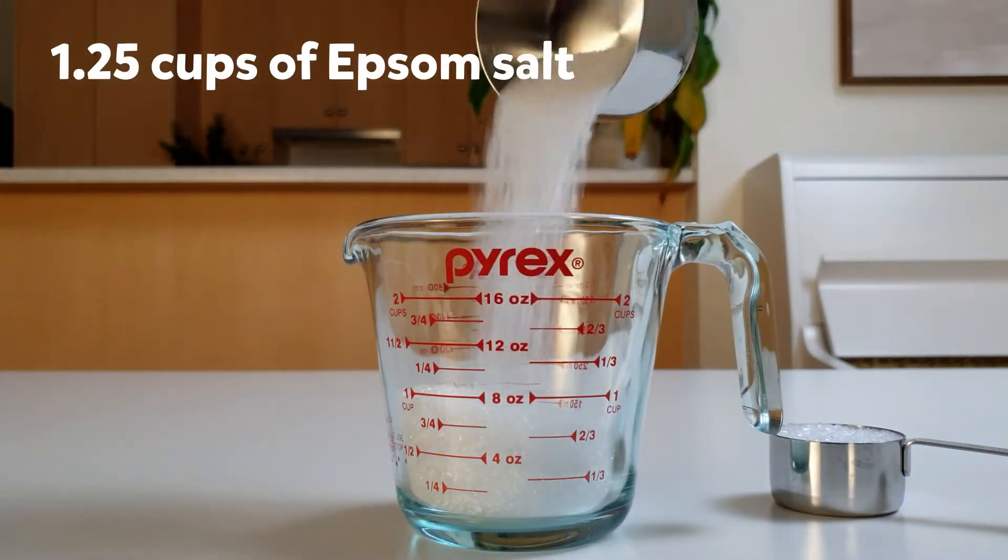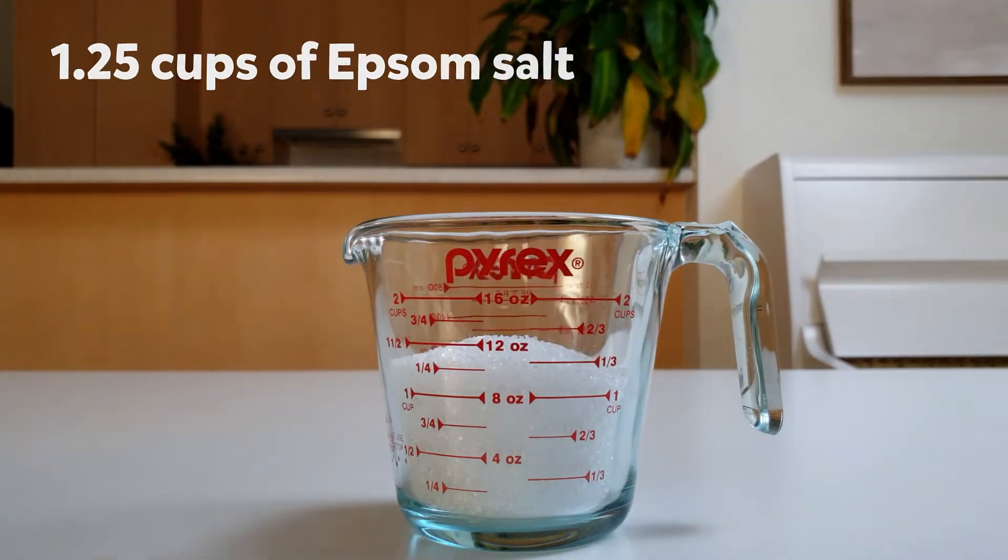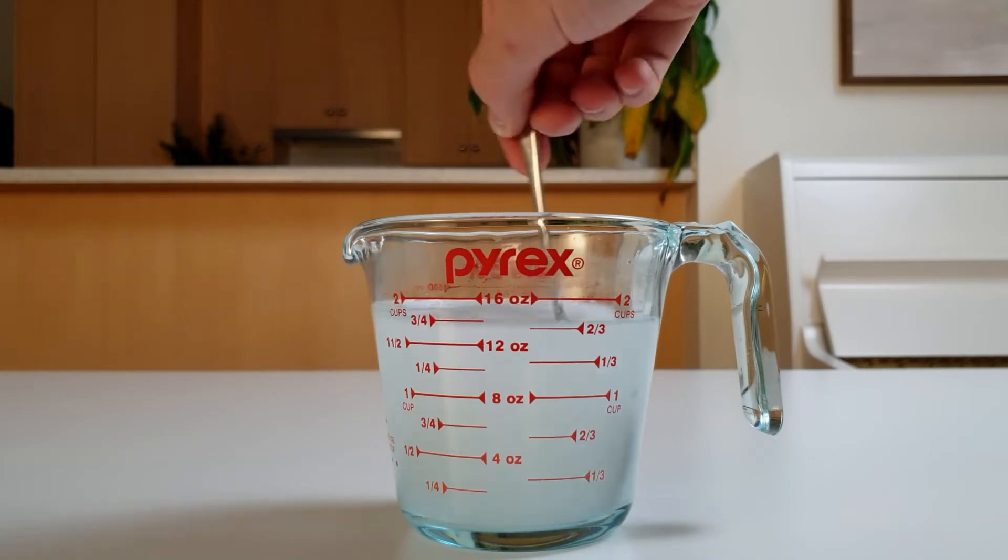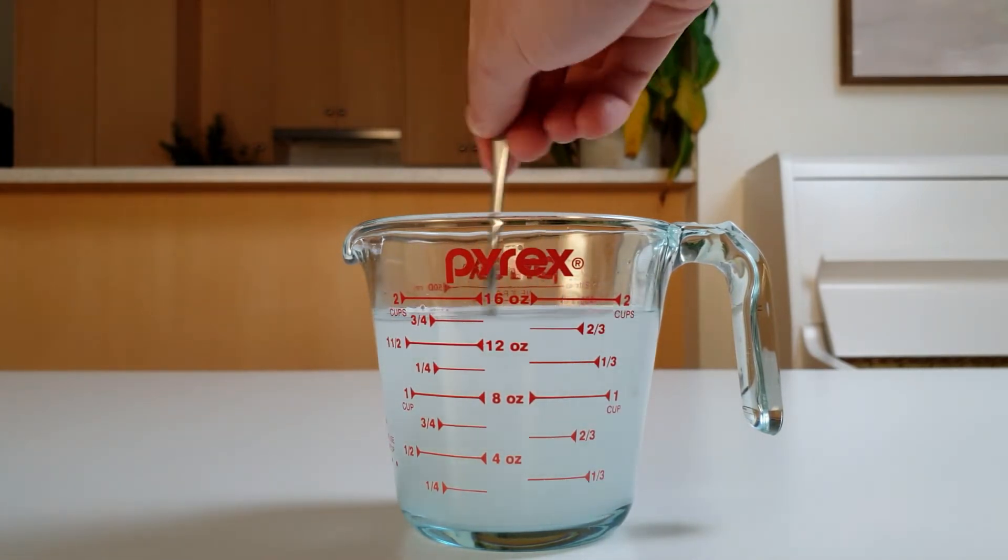First, pour one and a quarter cups of Epsom salt into a jug, and add one cup of warm water. Give this a stir for two minutes, and watch as the Epsom salt starts to dissolve.